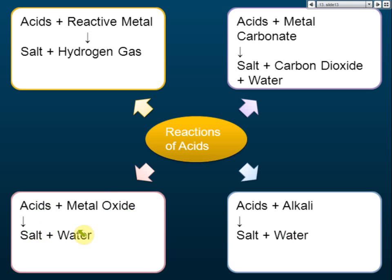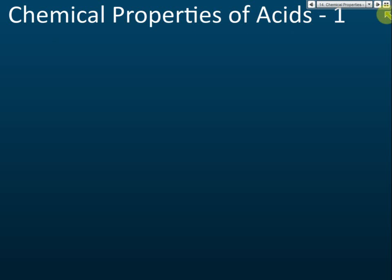These are the four reactions of acids that you must remember: acid with reactive metal, acid with carbonate, acid with alkali, and acid with metal oxide or base oxide. Metal oxide and base oxide are the same. So these are the four chemical properties of acids.